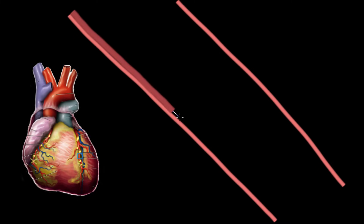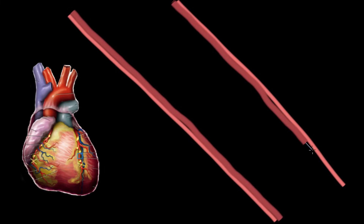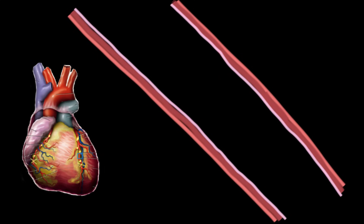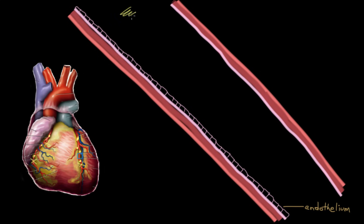Let's redraw our artery so we can go through it step by step. I'm drawing the three layers of the wall of the blood vessel. On the very inside, as part of this pink layer, we have a single layer of cells called the endothelium. Although it's just a single layer of cells thick, the endothelium has really important roles: it acts as a barrier between stuff in the blood and the rest of the vessel wall, and it secretes proteins onto its surface that prevent clotting and keep blood flowing smoothly.